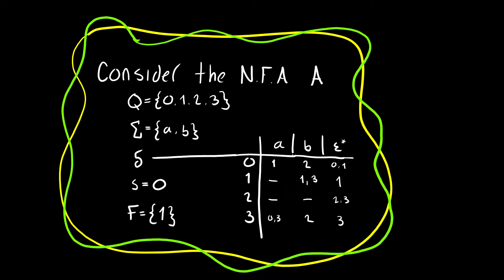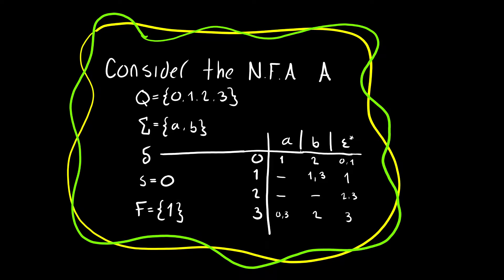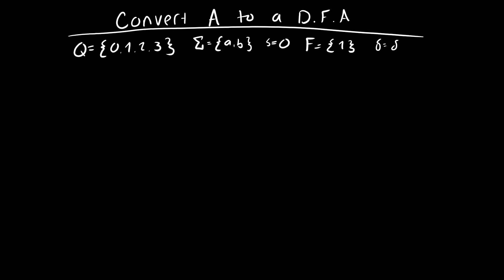So let's take this formal definition and create a state diagram, because a state diagram makes things a little more visual and easier to understand. Remember the formal definition: Q is the set of states, sigma is our input alphabet, the little s is our start state, the big F is the set of all accepting states, and delta is our transitions. I didn't rewrite delta because it's easier to just go back and forth.